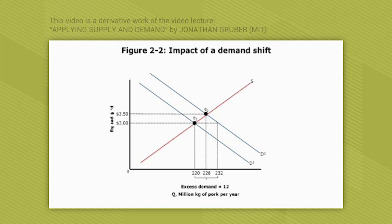Now the price of beef has gone up — maybe because of mad cow disease or something like that — which has raised the price of beef. So now people are saying they want more pork. That shifts the demand curve out. Initially, if the price stayed at $3, what would happen?